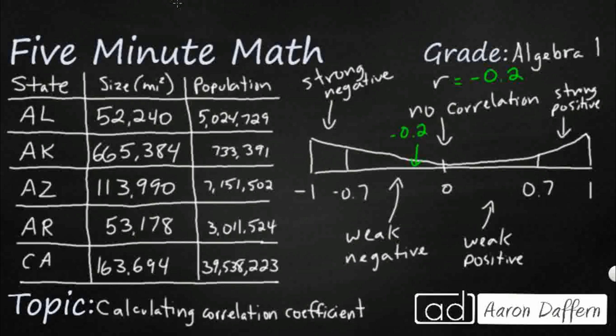You might be thinking, why would we have a weak negative? You would think it'd be a positive. Well, it's because I threw in California. Look at the size compared to the population — 39 million. Whereas look at Alaska: look how big that size is, 665,000 square miles, but look how tiny that population is. If you have these two in a set, it's not going to show a good correlation. You'd need to include all the states, then you'd get a weak positive.